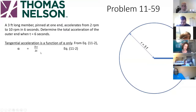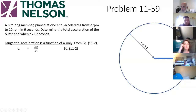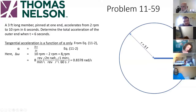We can calculate the rotational acceleration from equation 11-2. It's just like linear acceleration except in the rotational domain. Rotational acceleration alpha is equal to the change in rotational velocity over the change in time. Delta omega is equal to 10 minus 2, based on the definition of the problem, and the time is 6 seconds. So it's simply 8 over 6.